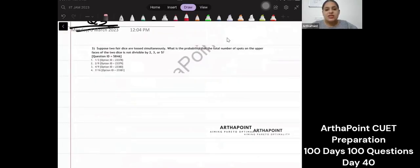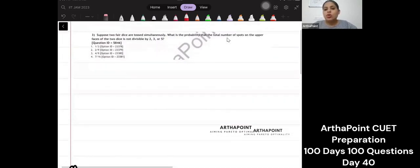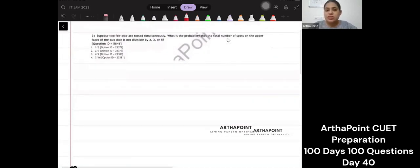Suppose two fair dice are tossed simultaneously. What is the probability that the total number of spots on the upper faces of the dice are not divisible by 2, 3, or 5? This is very simple. You don't want the number of spots to be divisible by 2, 3, or 5.